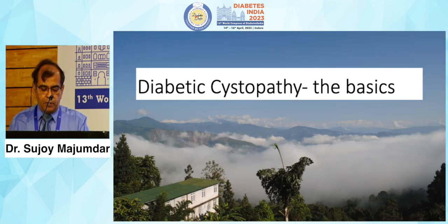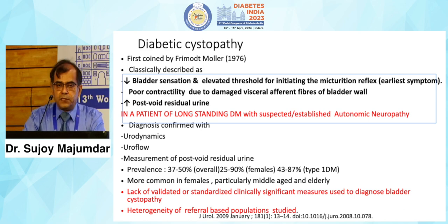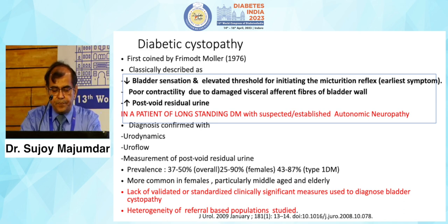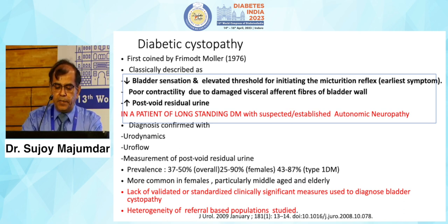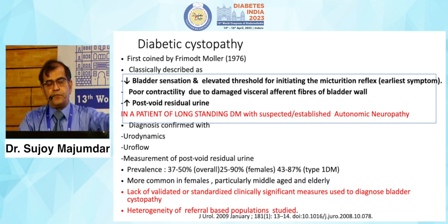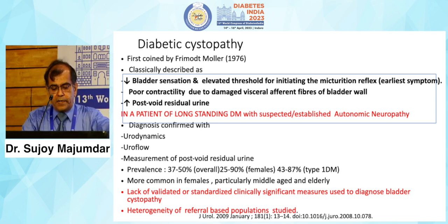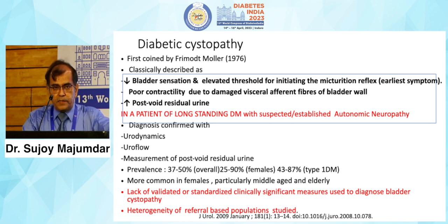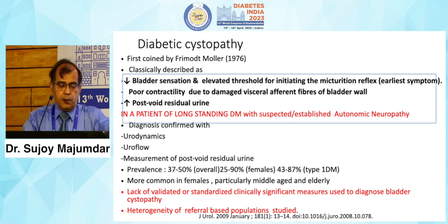Now moving on to diabetic cystopathy basics. This term was first coined by Fremont-Moller in 1976. It is classically described as reduced bladder sensation and an elevated threshold for initiating the micturition reflex — the earliest symptoms of diabetic cystopathy. There is poor contractility due to damaged visceral afferent fibers of the bladder wall and, as a consequence, increased post-void residual urine. This usually occurs in patients with long-standing diabetes of at least five to ten years and suspected or established autonomic neuropathy.